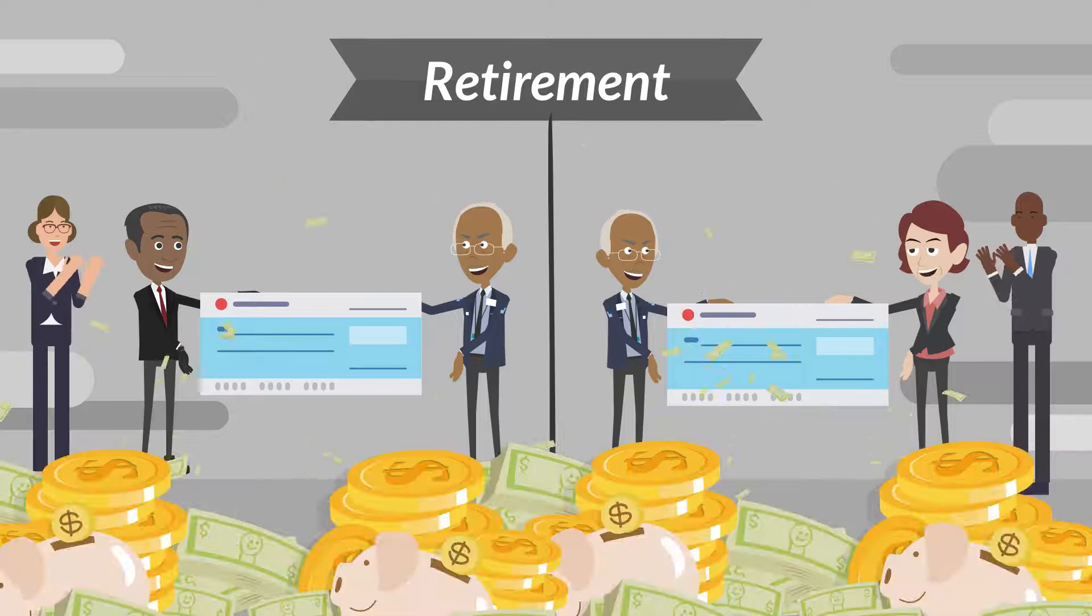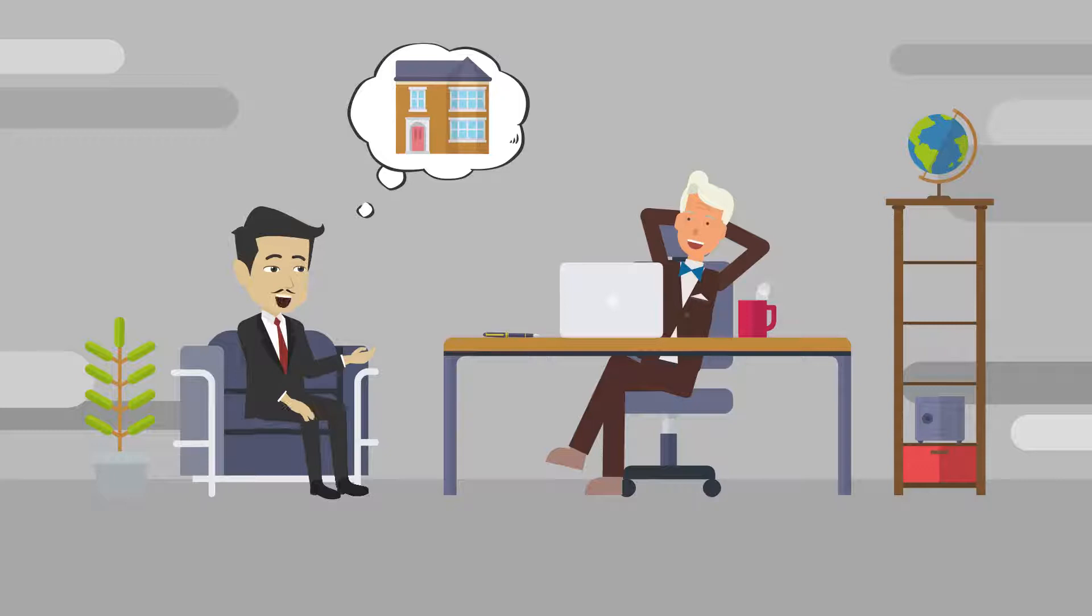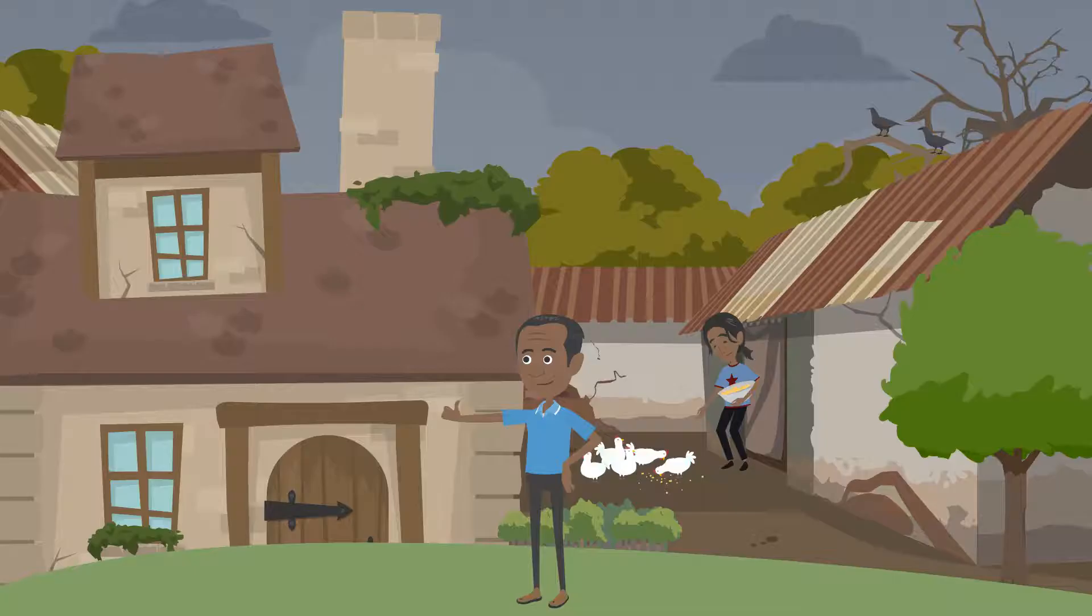The white man purchases a cheap property in a middle-income suburb and retires. The black man builds a home in a rural village, as determined by the act.